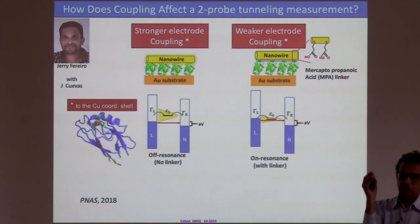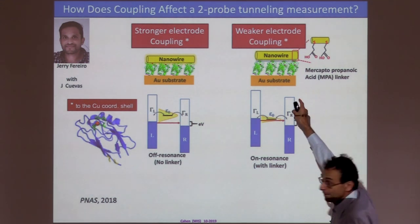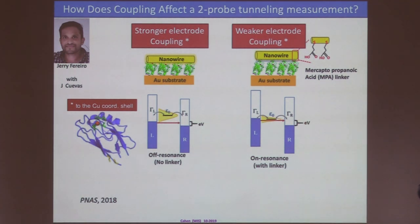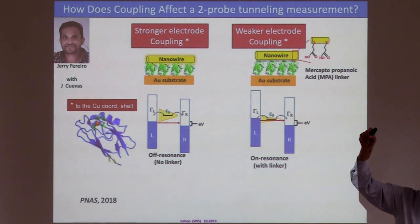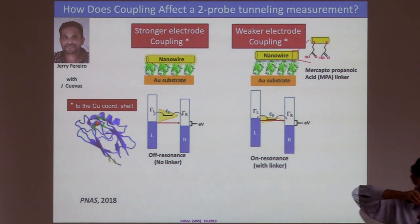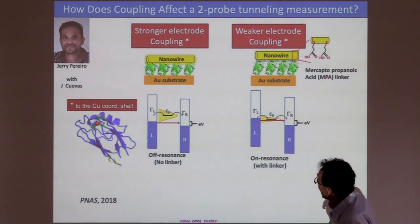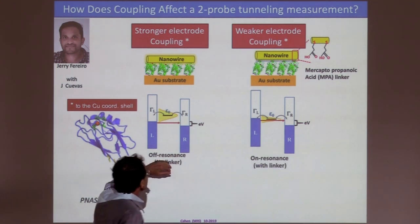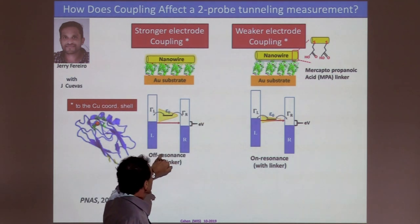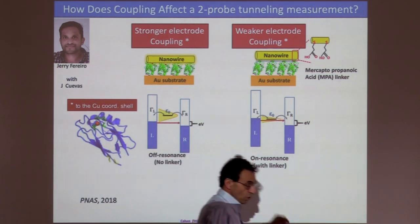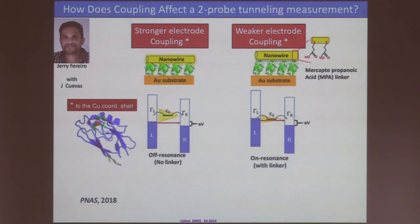So you have a nanorod with the proteins in this cartoon and the substrate. Realize it's a cartoon. They're probably not standing like soldiers on a parade. And then he put a linker there. An organic, saturated organic linker. Mercaptopropanoic acid. The propanoic is the important thing here. Without anything else. He didn't try to make a chemical bond. It just sits there to separate the spacer. And the argument is that this will be strongly coupled, and this will be weakly coupled. And therefore, this could be off, and this could be on resonance.